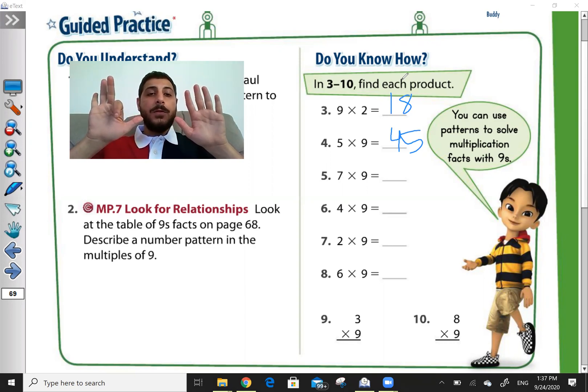Then how much before this finger do I have? I have 6. After this finger, I have 3. So 63. So 7 times 9 equals to 63.